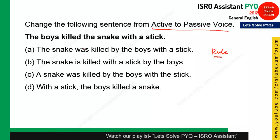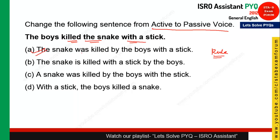This question is from active and passive voice. The sentence is: 'The boy killed the snake with a stick.' Converting to passive voice: since it is a past sentence, the passive form starts with the object. 'The snake was killed by the boy with a stick.' Option A is the correct answer.